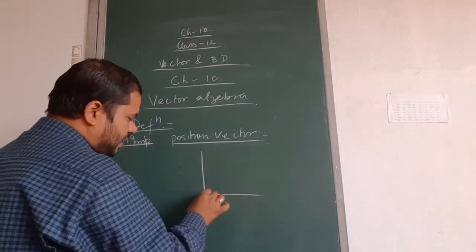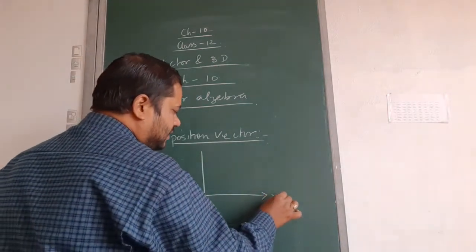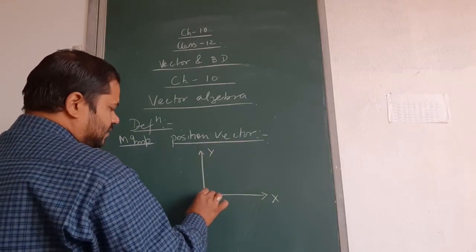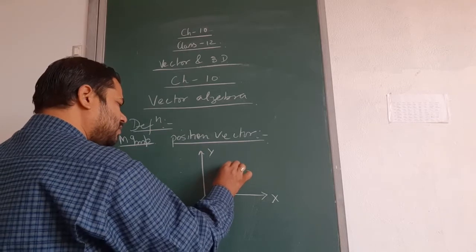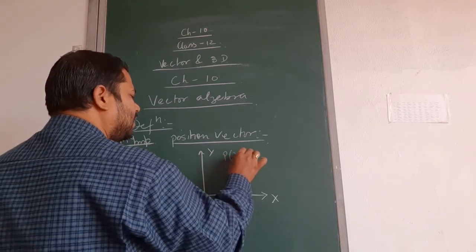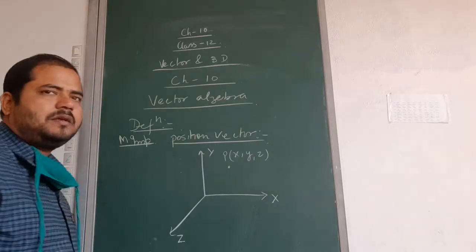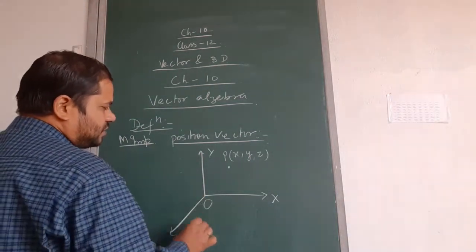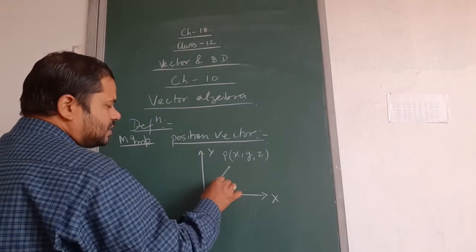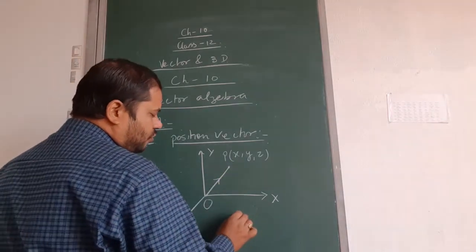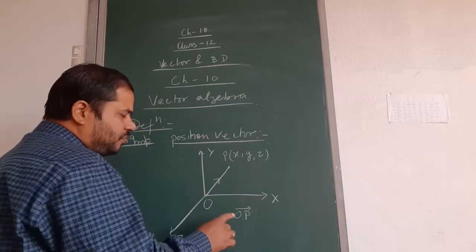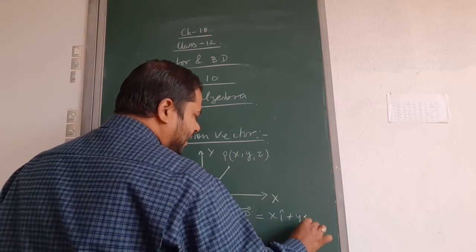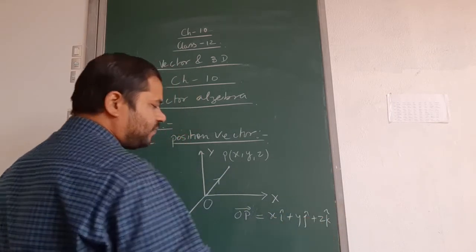Suppose here we have x, y, and z — that means 3D. Suppose this is a point P(x, y, z). The position vector of point P from the origin is OP, and OP is nothing but x·î + y·ĵ + z·k̂.